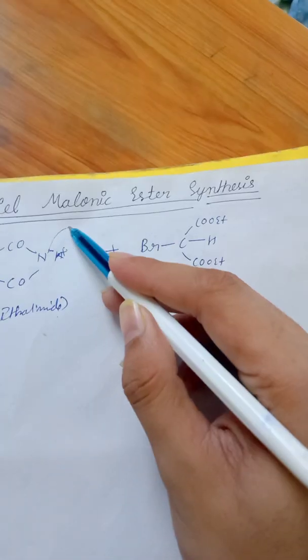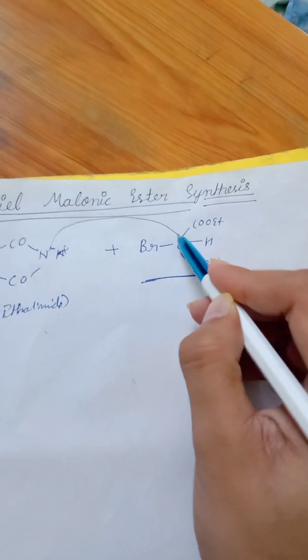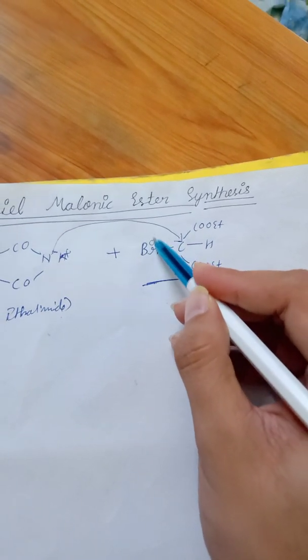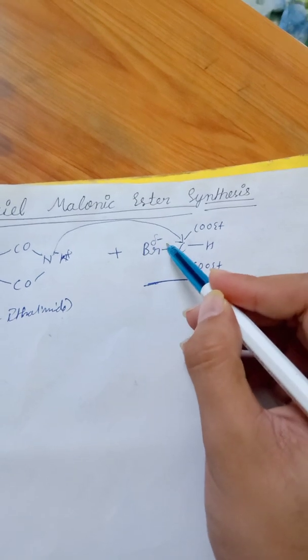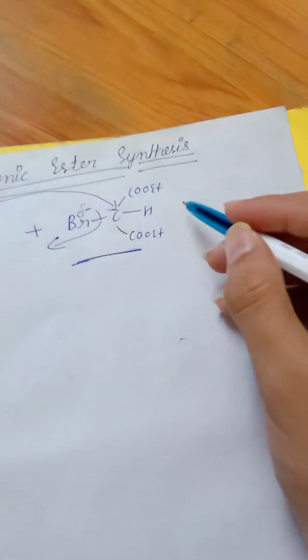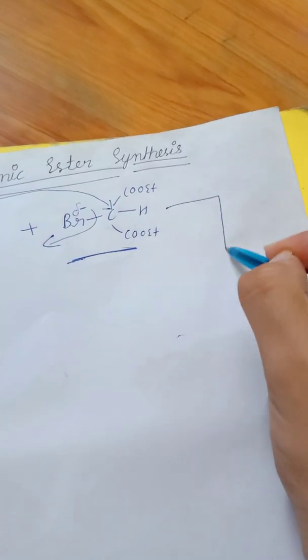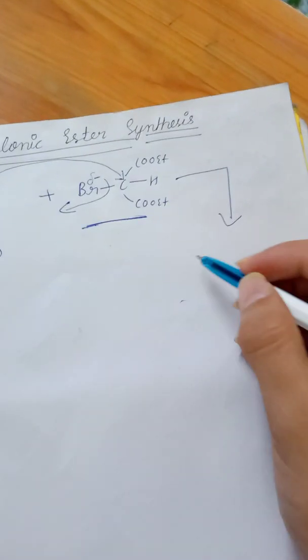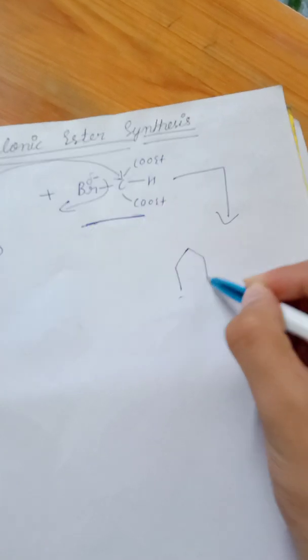This nitrogen will react with carbon and here a partially negative charge will occur and Br will leave as a good leaving agent and the product which will be formed is this potassium phthalimide.